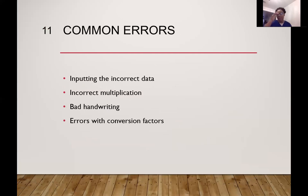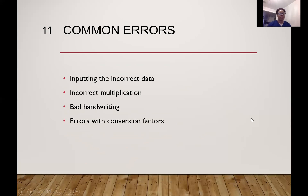Sometimes there are some very common errors when we're talking about DA equations. Sometimes we input incorrect data. For example, if I don't know my conversion factors and I put the wrong conversion, that can mess me up. If I don't multiply correctly, that can cause an issue. If I'm writing and I can't understand my handwriting, that can cause some errors. Again, a key source of errors is conversion factors, so we really need to know those conversion factors.